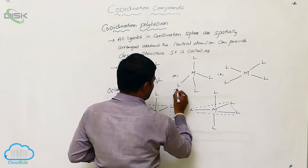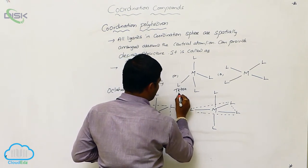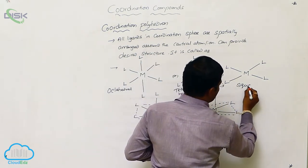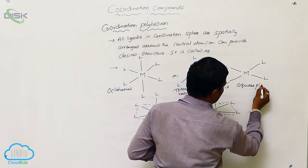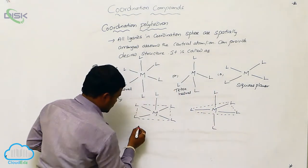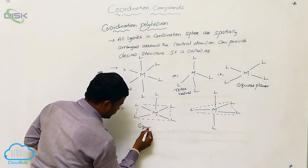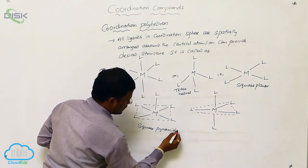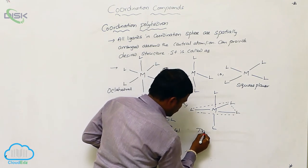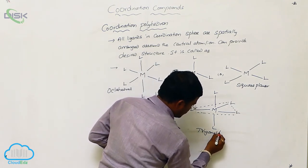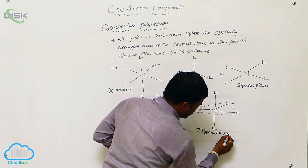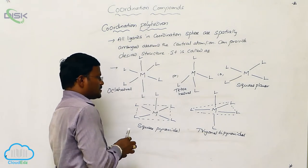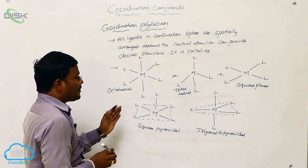So these are the expected structures: octahedral geometry, tetrahedral geometry, square planar geometry, square pyramidal geometry, and trigonal bipyramidal geometry.